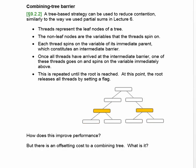Once all the threads arrive at this barrier, one of the threads goes on and spins at the variable of its immediate parent. This is repeated until the root is reached. The root then releases all threads by setting a flag, which may be propagated down to the leaf nodes.